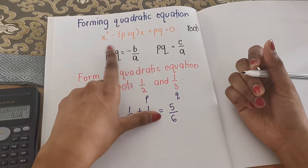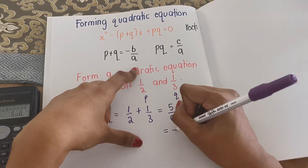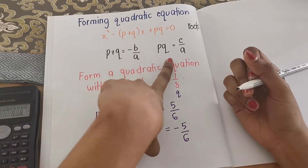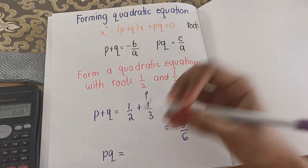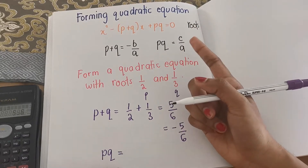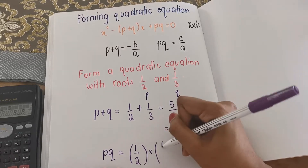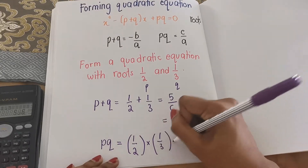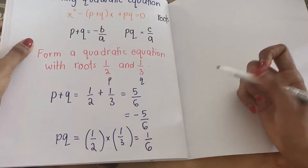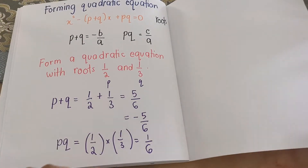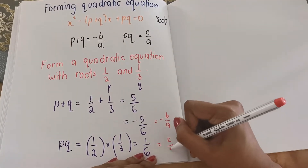Our P plus Q is equal to negative B over A, so we write it as negative 5/6. Now, what is our PQ? PQ is C over A, which is 1/2 times 1/3. So 1/2 times 1/3 is 1/6. Since we have both, negative 5/6 is negative B over A and 1/6 is C over A.